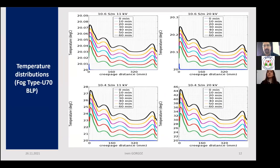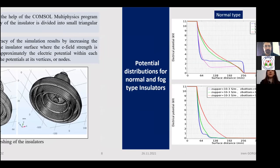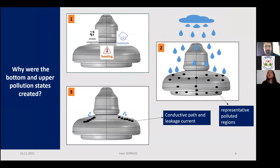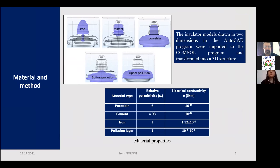Uniform conditions is a homogeneous distribution. You can see bottom and upper pollution layers in the picture. Bottom and upper pollutions are homogeneous — that is uniform pollution. For non-uniform pollution, the bottom and upper pollution conductivities are different from each other. We can change the bottom pollution conductivity while keeping the upper surface constant, and we can see the pollution electrical conductivity values in the table — for example, 10⁻³ and 10⁻⁶ S/m.